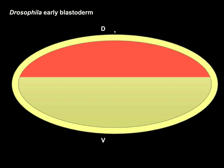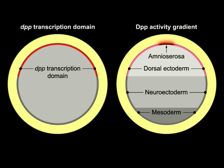DPP is transcribed uniformly throughout the dorsal domain, yet it forms an activity gradient such that there is a low level of signaling in the dorsal lateral regions, which will form the dorsal ectoderm, and a high level of signaling in the dorsal most cells, which will form the dorsal most tissue, the amniocerosa.